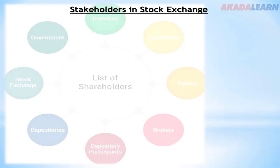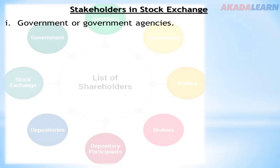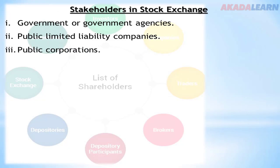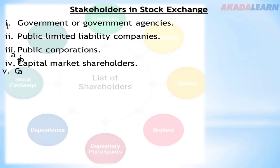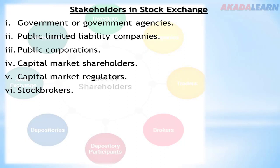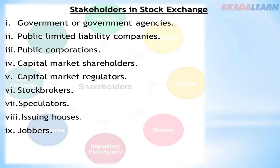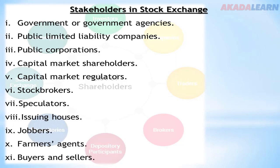Let's look at stakeholders in stock exchange — who are the people involved? Number one, we have the government or government agencies. Number two, we have public limited liability companies. Then we have public corporations, capital market shareholders, capital market regulators, stockbrokers, speculators, issuance houses, businesses, workers, farmers, agents, and buyers and sellers. These are the stakeholders in the stock exchange market that has to do with agriculture.